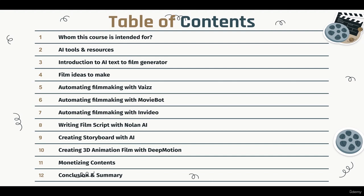Chapter two covers AI tools and resources. I'll introduce all the AI tools we'll use. We'll talk about three AI text-to-film generators: Vise, MovieBot, and InVideo. We'll also cover Storyboard That and Crot.io for storyboard creation, Nolan AI for generating film scripts, and Deep Motion for 3D animation films. In total that's six or seven tools — and don't worry, all of them are completely free.